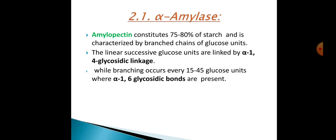The second component is amylopectin, which constitutes 75 to 80 percent of starch and is characterized by branched chains of glucose units. The linear successive glucose units are linked by alpha-1,4 glycosidic linkages, while branching occurs every 15 to 45 glucose units where alpha-1,6 glycosidic bonds are present.